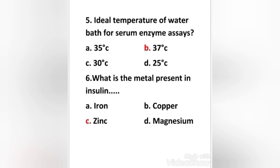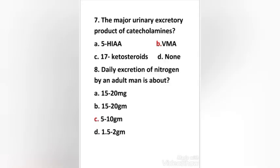Next question: The major urinary excretory product of catecholamines: 5-HIAA, VMA, 17-ketosteroids, none. Right answer is option B: VMA, vanillylmandelic acid.